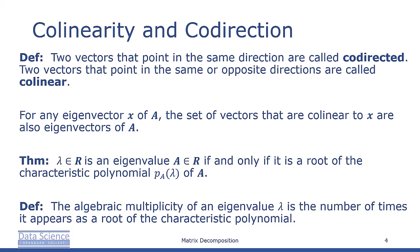A real number lambda is an eigenvalue of a matrix A if and only if it's the root of the characteristic polynomial of A in terms of lambda. The algebraic multiplicity of an eigenvalue lambda is the number of times that it appears as a root of the characteristic polynomial.